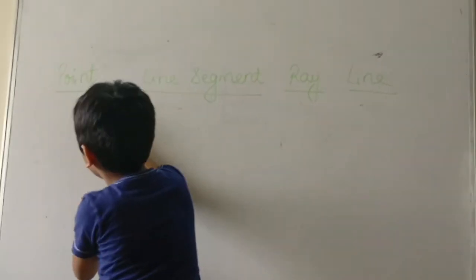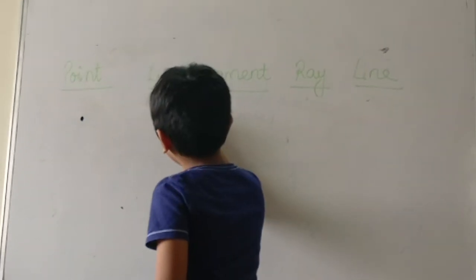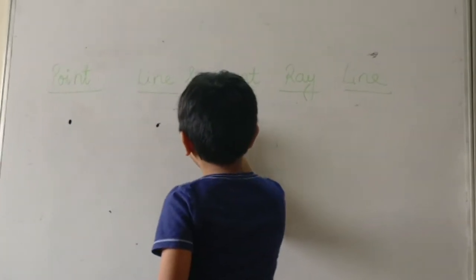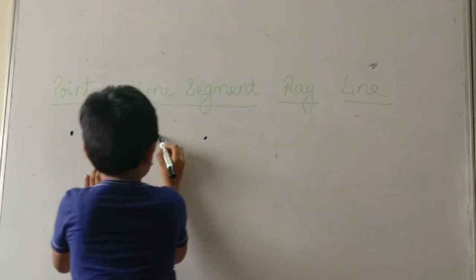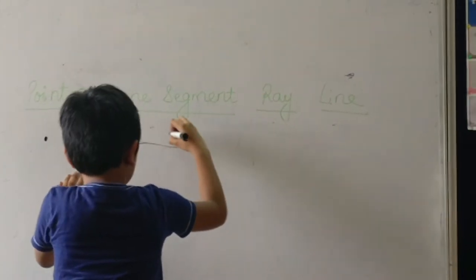Point is a dot. Line segment, one side dot and another side dot. And there is a line. Then it becomes A and B.